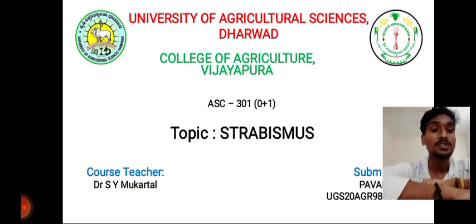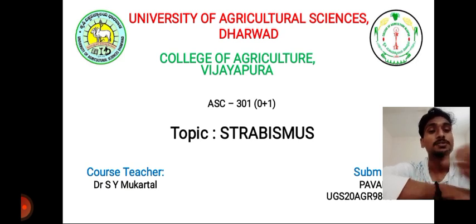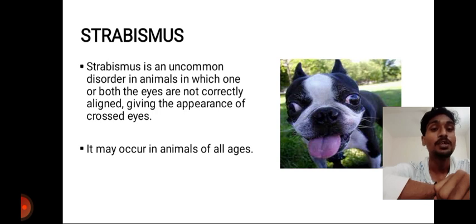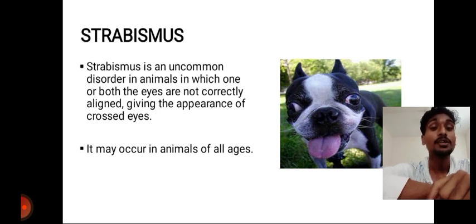Let's first discuss about the definition. Strabismus is an uncommon disorder in animals in which one or both the eyes are not correctly aligned, giving the appearance of cross-eye. It may occur in animals of all ages.